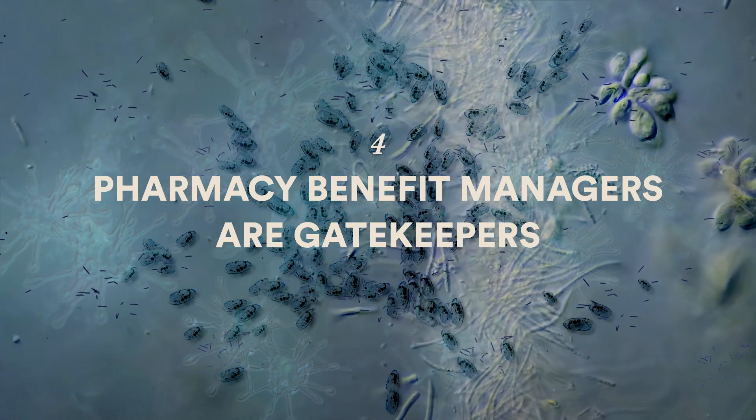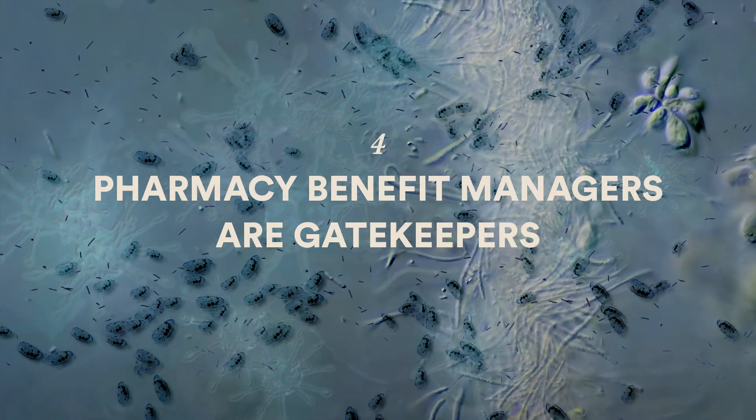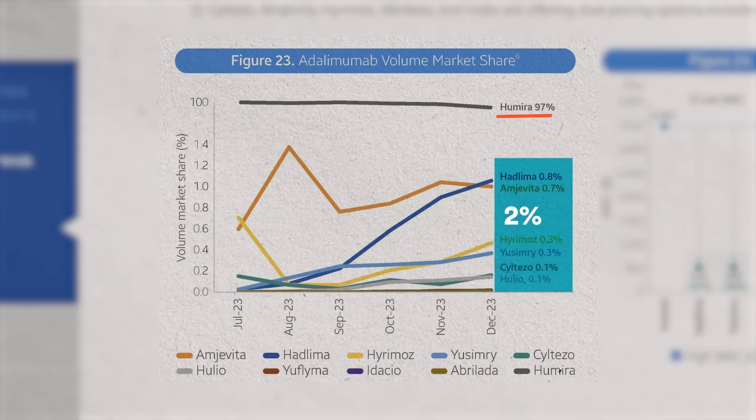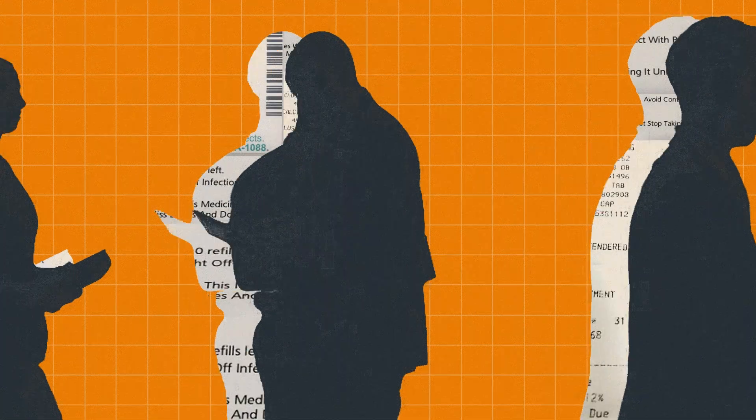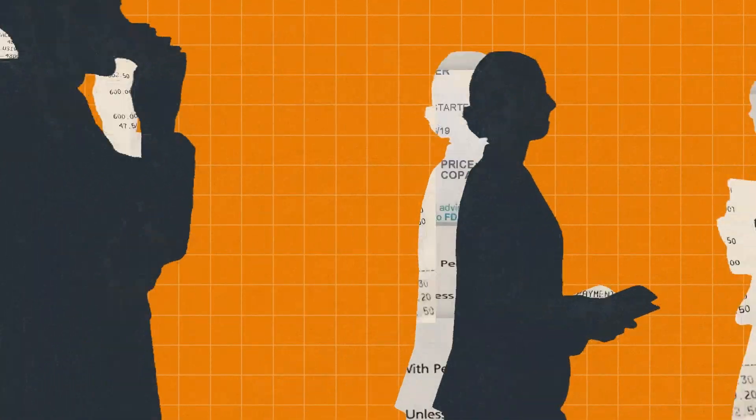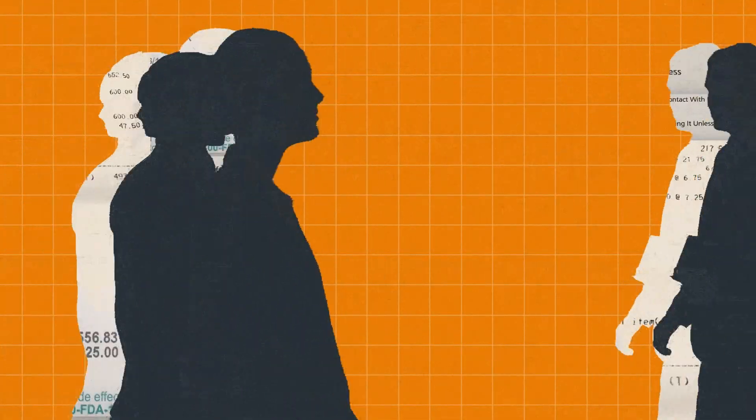When biosimilars for Humira were released in 2023, Humira only lost 2 percent of its market to the five available biosimilars at the time, even though some of these other versions cost 85 percent less than Humira. That means a lot of people were still paying for the higher priced brand name drug. Why?